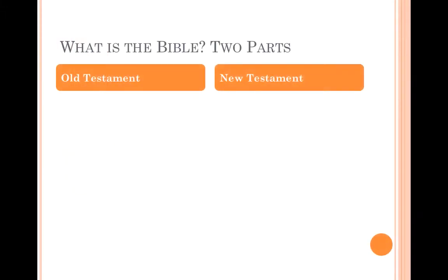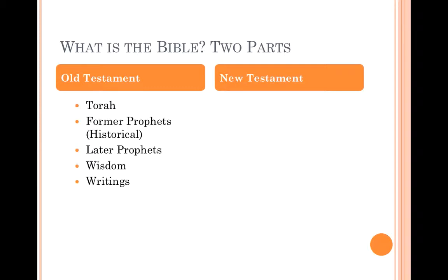So the first thing is: what is the Bible? If you open up to the table of contents, you'd see that the Bible is made up of primarily two parts, especially in our Protestant Bibles. The first is the Old Testament, which contains the Torah or Pentateuch — the first five books of the Bible, Genesis through Deuteronomy.